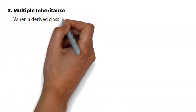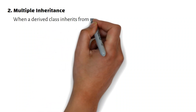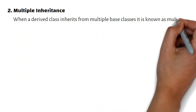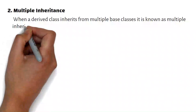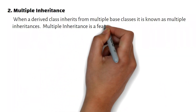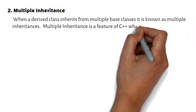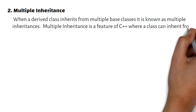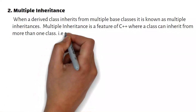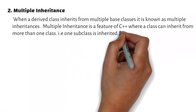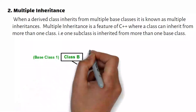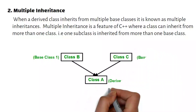Multiple inheritance is a feature of C++ where a class can inherit from more than one class, i.e., one subclass is inherited from more than one base class.